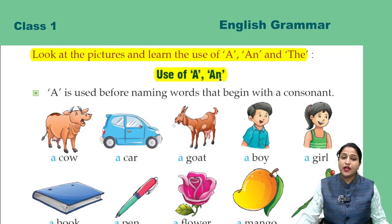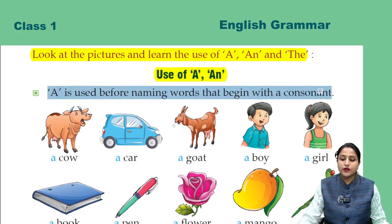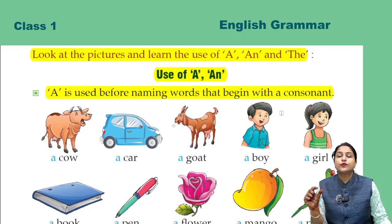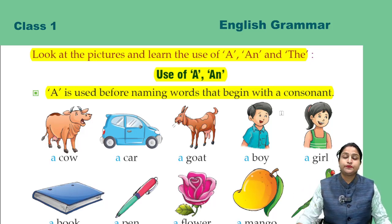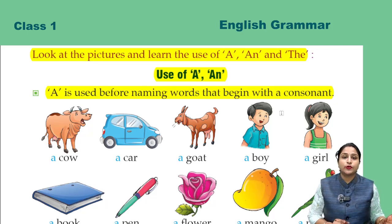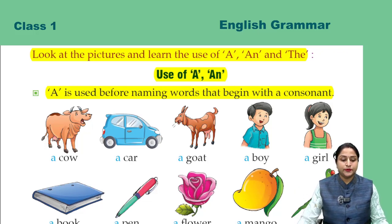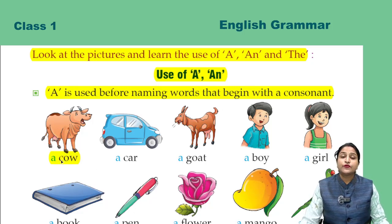Use of A and N. Sab se pehle hum padhenge A aur N ka use. A is used before naming words that begin with a consonant. A ka use hama un naming words se pehle karte hain ya un nouns se pehle karte hain joh kisi consonant se start hote hain. Consonant aapne padhe huye hain — consonant kya hote hain? Jo vowels se alag hote hain: B, C, D — ye sab consonant hote hain. So pehle dekhiye: a cow. Cow mein jo C hai, woh consonant hai.